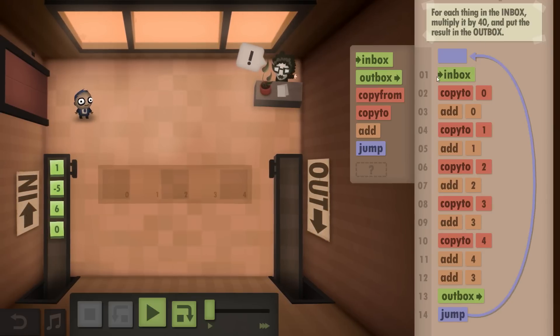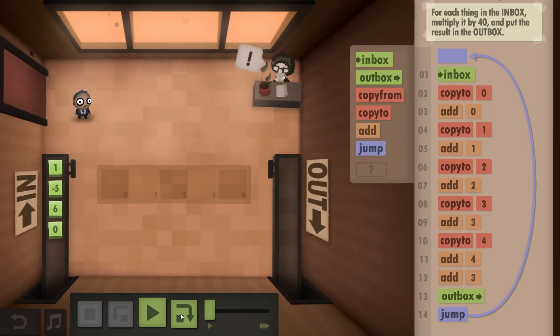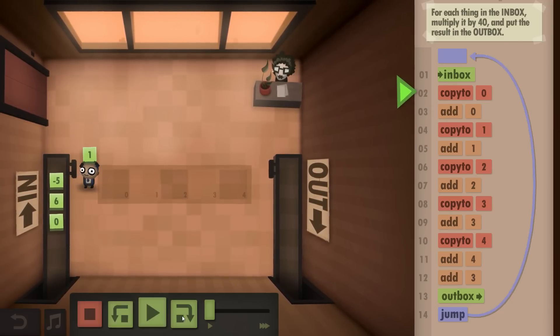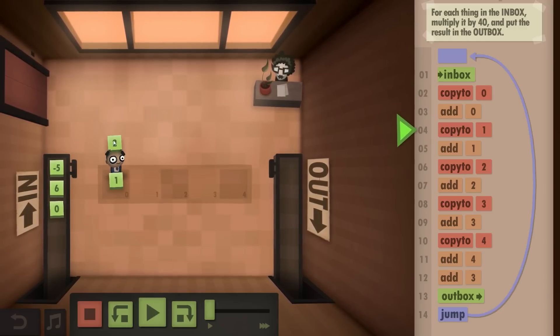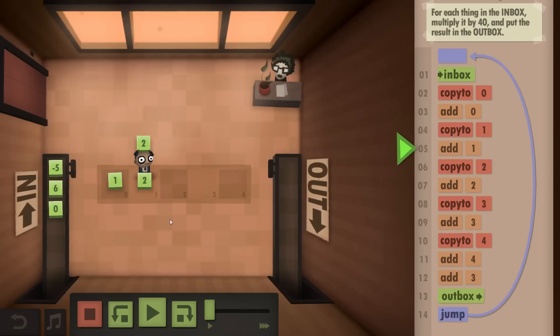So what we instead do is we take from the inbox, copy to 0, then add 0 so we double it. Essentially the same thing that we've seen before. We take from the inbox, add itself, get the double, put that in field number 1.